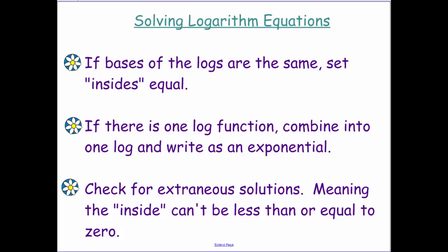And then this is key. Make sure that you are checking for extraneous solutions, meaning the inside of the log can't be less than or equal to zero. When I'm talking about the inside of the log, I'm talking about the piece that's in here, that 2x plus 1, that piece cannot be negative or equal to zero. And that goes back to the domain restriction we had on logarithms.